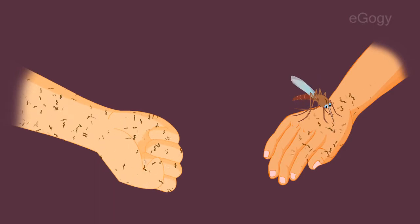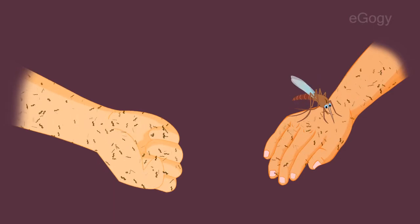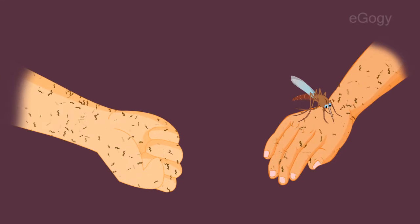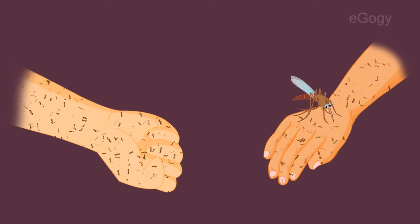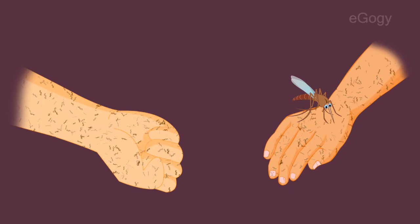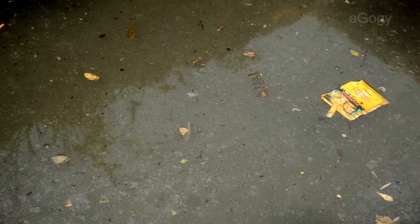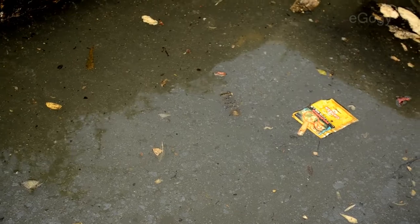Later, the mosquito can pass the virus to other humans when biting them. Mosquitoes breed mostly in stagnant water.